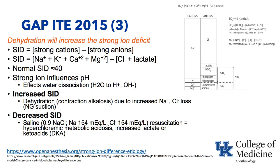Things that increase strong ion difference include dehydration, which was the gap in knowledge. Dehydration causes a contraction alkalosis, frequently seen in patients on diuretics like furosemide, and increases sodium, a strong cation, making the strong ion difference greater than 40. Chloride loss — such as with NG suction — also reduces the strong anion side, so the difference between positives and negatives becomes greater, increasing the strong ion difference.